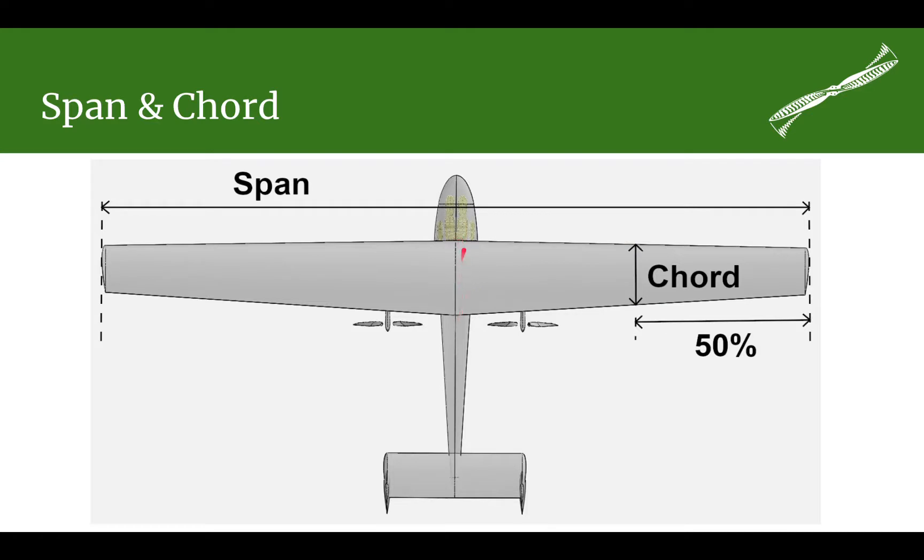The root is a little bit longer in chord than the tip is. The chord is going to be the mean or average chord. For a tapered wing with a simple taper like this one, the average chord or mean aerodynamic chord is going to be halfway along the semi-span.